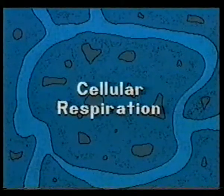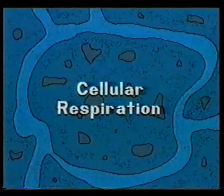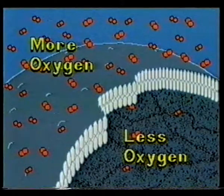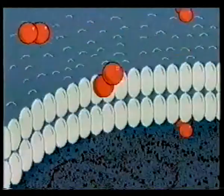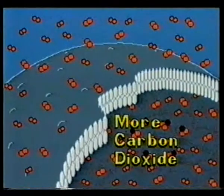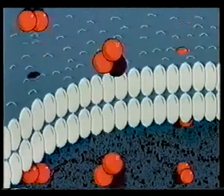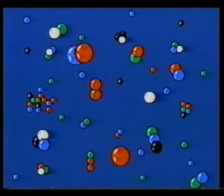Cellular respiration is a more complicated biochemical balancing mechanism. Cells require oxygen, which must be brought into the body and then into each cell. At the same time, cell metabolism produces large quantities of carbon dioxide, which must be removed — first from the cell and then from the body. The fluid outside the cells contains a wide variety of atoms and ions, and there is continual chemical activity.